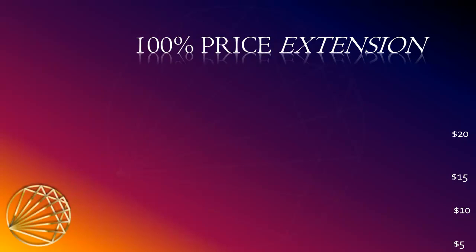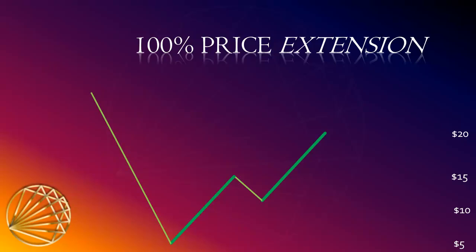The price extension routine helps identify support and resistance levels. In this example we're going to identify a 100 percent extension. The trend appears to be down with a little rally, and we're looking for selling opportunities — specifically whether $20 would be an appropriate resistance level to place a sell order. Notice that the first rally against the downtrend was from $5 to $15, a range of $10. If we use a 100 percent extension, we wait for a 100 percent extension of that initial rally.